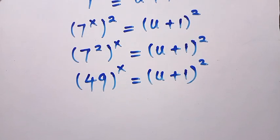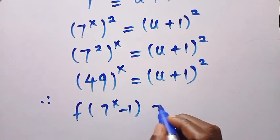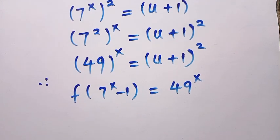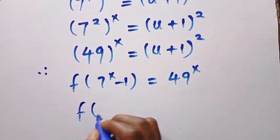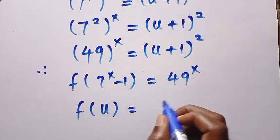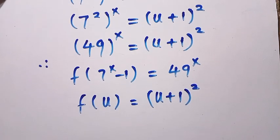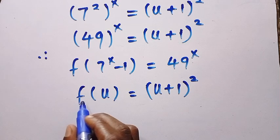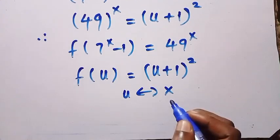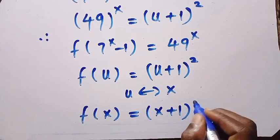Coming back to the given function, f of 7 to the power of x minus 1 equals 49 to the power of x. Since we let 7 to the power x minus 1 equal u from the beginning, we now have f of u equals u plus 1 all raised to the power of 2, where u and x are both members of the real numbers. So replacing u with x, we have f of x equals x plus 1 all raised to the power of 2.